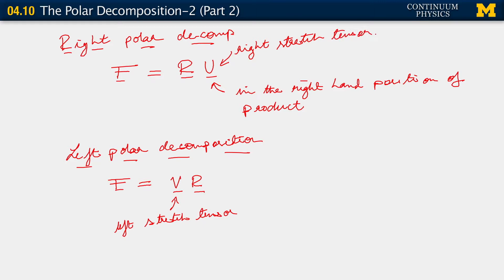The rotation tensors involved in the two decompositions, the two polar decompositions, are the same. It's the same R. So what we have here is that R belongs to SO3, V belongs to S plus 3, so it's also positive definite. Now, just as we saw that U square is related to C, we also have V square equals B, which is called the left Cauchy-Green tensor.